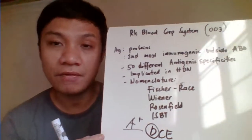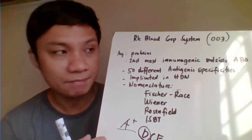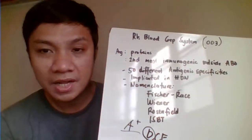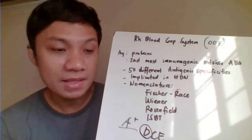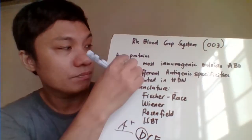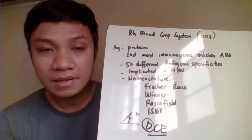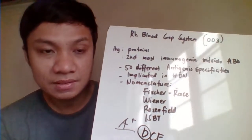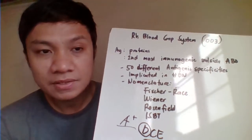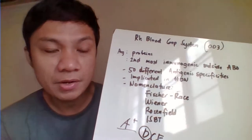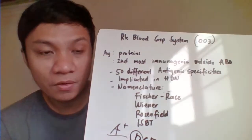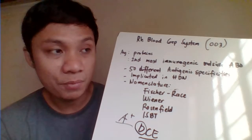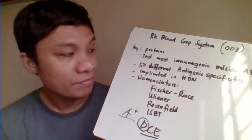If you are A negative, meaning you are negative for the D antigen. The RH blood group system antigens — D, C, and E — are found in our RBC membrane as proteins. In the case of the ABO blood group system, those are carbohydrates, but for RH, the antigens are proteins.